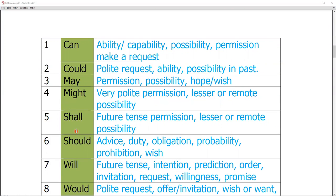Shall, as you can know, we use in tenses. And in which kind of tense? Future tense only. So shall is a future tense part, and it is also used for the permission, lesser or remote possibility.